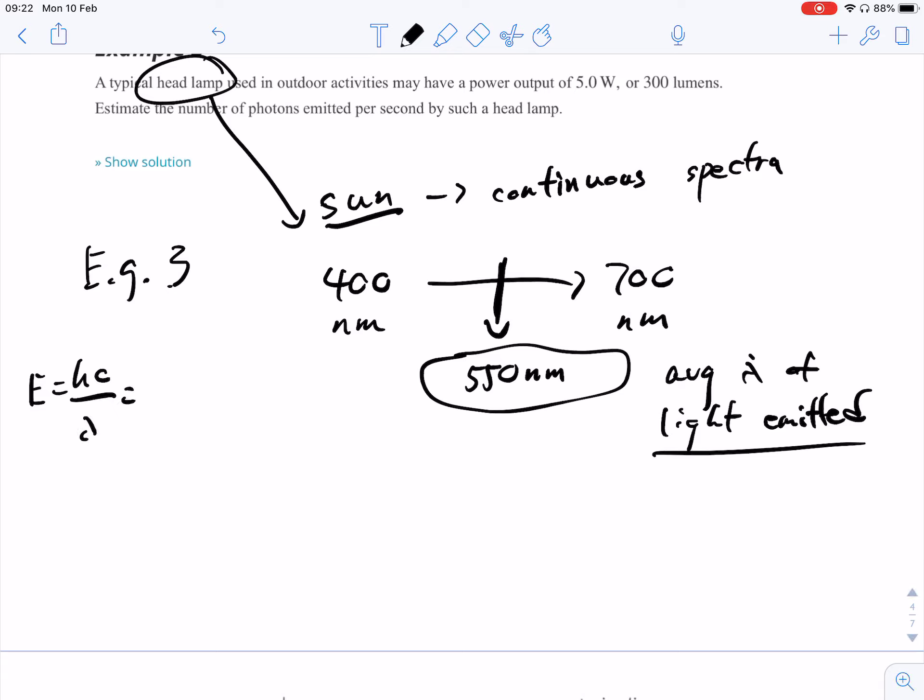So we're going to treat it almost as if it were sort of like greenish yellow light. And we're going to make our calculation on that. So now we have E equals hc over lambda. We're going to do our substitution 6.63 negative 34, speed of light 3 times 10 to the power of 8, divided by our nanometers which is negative 9, and we get 3.6 times 10 to the power of negative 19 joules.